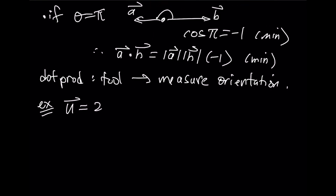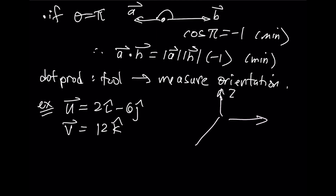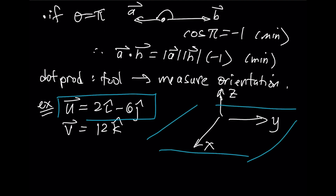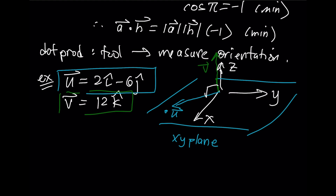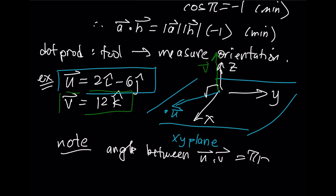For example, if I give you the vector 2i minus 6j and the vector 12k, here is a three-dimensional set of axes. The vector 2i minus 6j has no z component, so it lives in the xy plane. The vector 12k points out of the plane. You should be able to see from this picture that those two vectors have an angle of pi over 2 between them, which means their dot product must be zero.